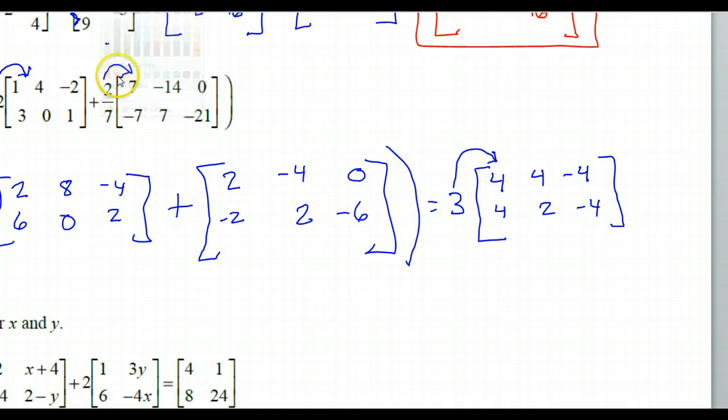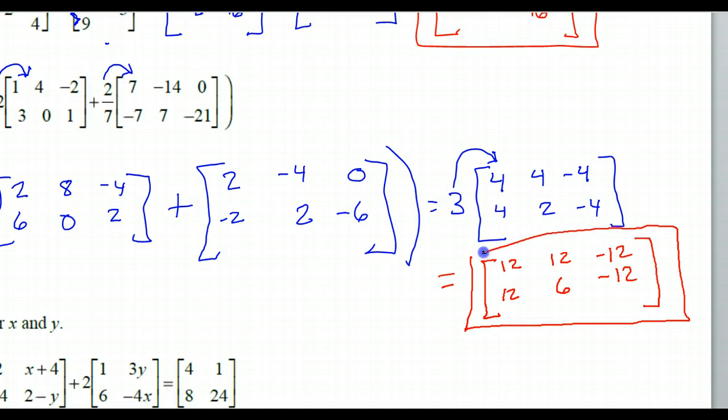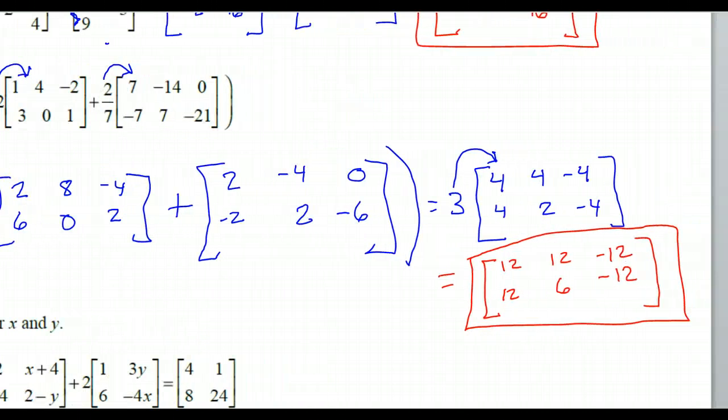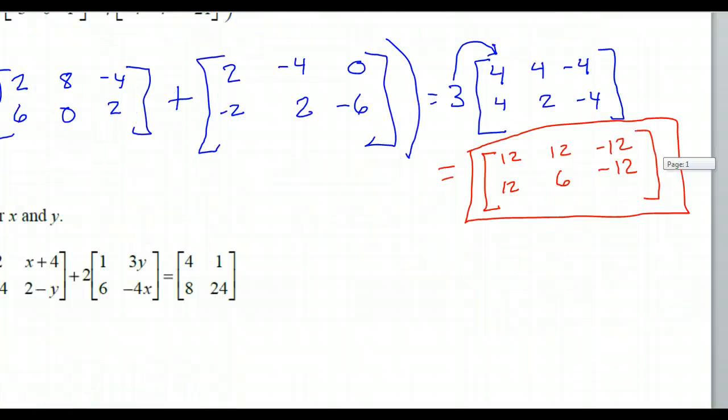And then for the final answer, I'll just go ahead and multiply everything by this 3. So for the final answer, I guess I'll switch over to red. So that's just going to be 12, 12, negative 12, 12, 6, negative 12. That seems to be the answer to that one. Number 9. As long as I did not make a careless mistake.